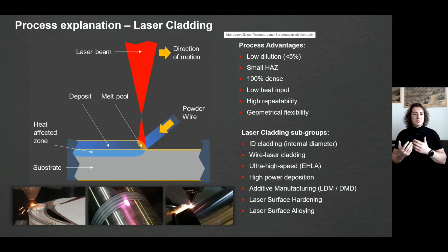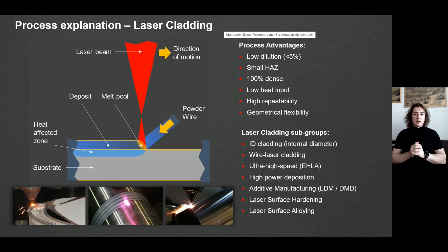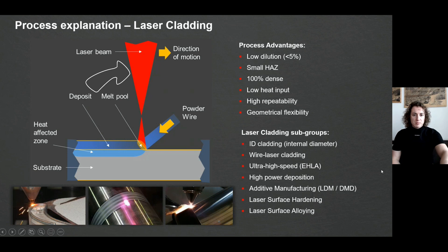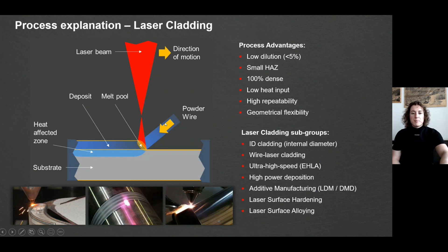At its second stage, we might repair worn surfaces and geometrically restore certain components to their initial dimensions. So how does it look? We have a laser beam as an energy source, and using optical components we can focus it on the surface of our substrate material. A melting bath is then formed, and inside the melting bath we can add a filler material in the form of powder or wire. This material is melted with the help of laser energy and produces a coating on the surface of our substrate.